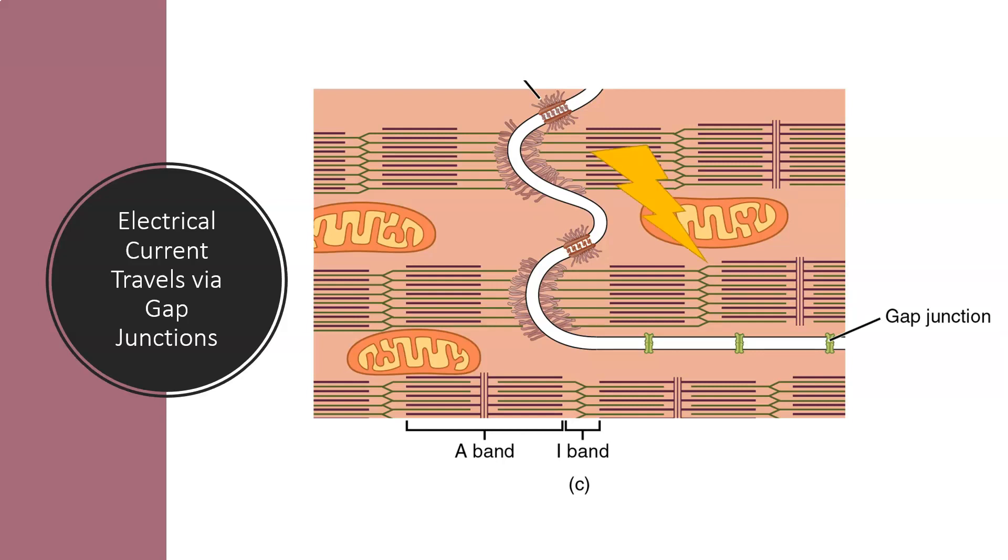When an action potential occurs, the positively charged ions enter the cell. These ions can travel from one cell to another through the gap junctions, which triggers the voltage-gated channels in the adjacent cell to fire an action potential. Thus, the action potential can keep traveling from cell to cell throughout the cardiac tissue.